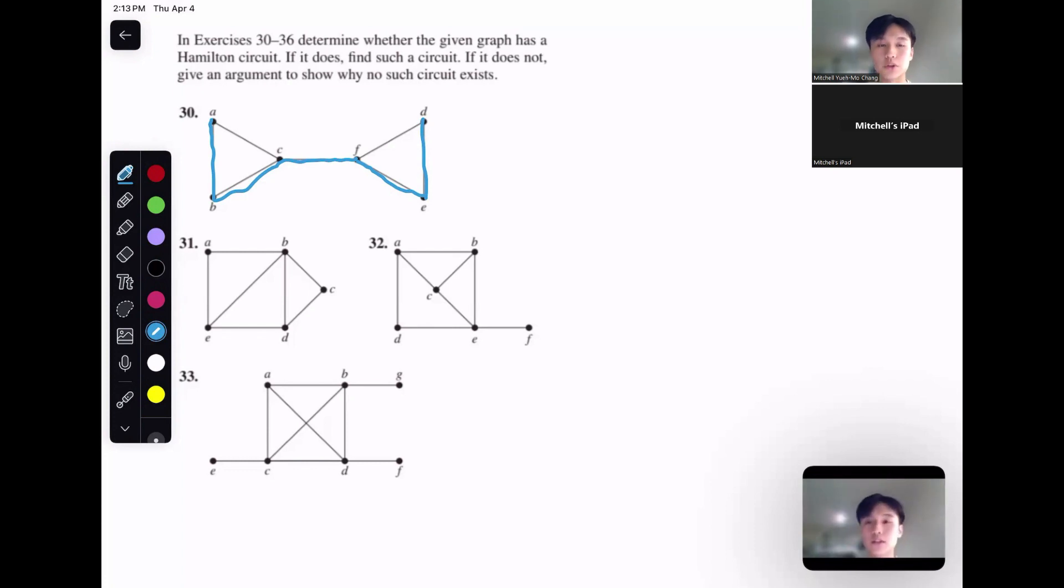So stuff like this, where you kind of see a bottleneck or other situations like such, can be indicative of things not having a Hamiltonian cycle, such that this doesn't. For 31, we have a much more friendly graph for our purposes, I'd like to say.